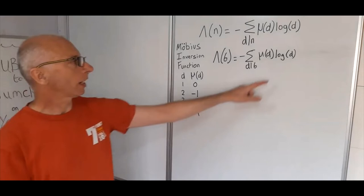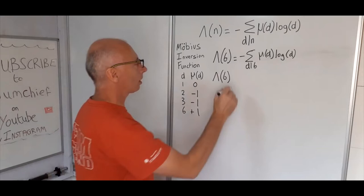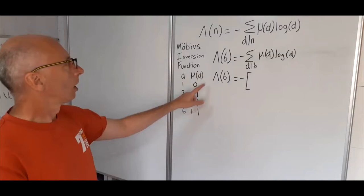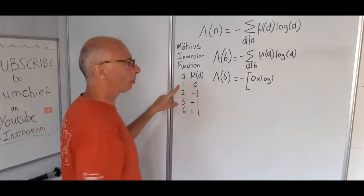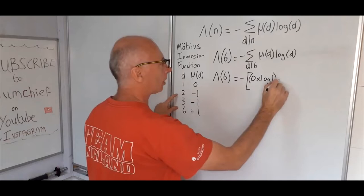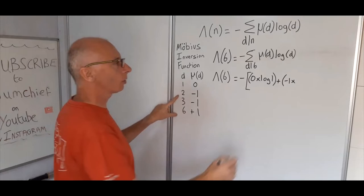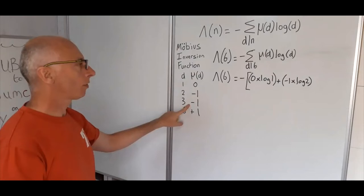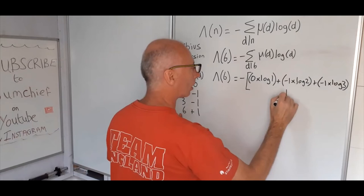For the log, we just plug in the log of all these numbers. The Von Mangoldt function of 6 equals the negative value. Mu of d is 0 times log of 1, that's all going to be 0. Then we add mu of 2, which is minus 1 times log of 2. Next for 3 is minus 1 times log of 3. And for 6, we add 1 times log of 6.